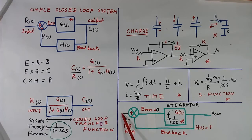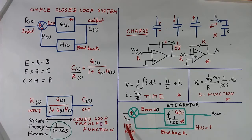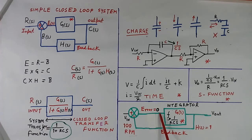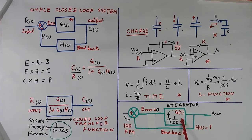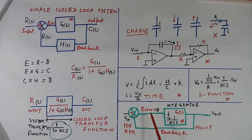Similarly, suppose we want 90 RPM instead of 100. This was working at 100 RPM, we want 90 RPM. So this is 90, this is 100 — so minus 10 will come because of the minus junction. The capacitor will discharge, and voltage will decrease — output will decrease — till this 100 becomes 90. The moment it becomes 90: this is 90, this is 90, this is 90 — error is 0. It stabilizes.